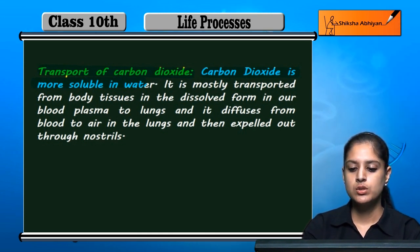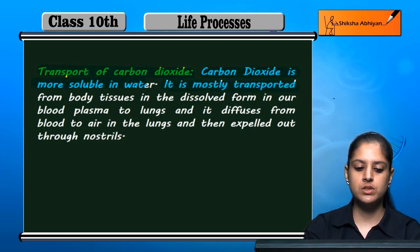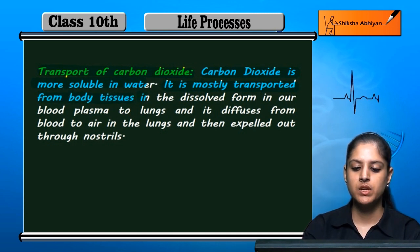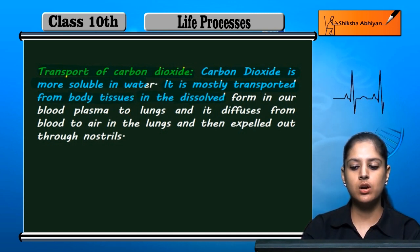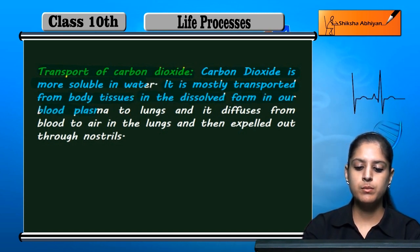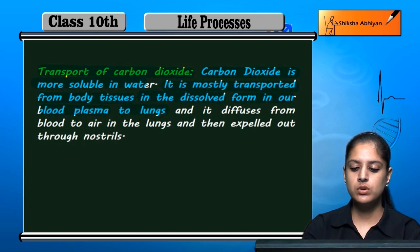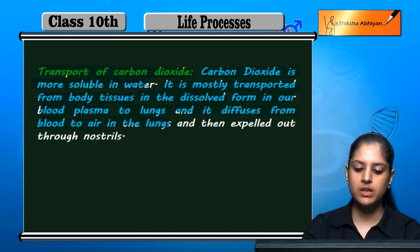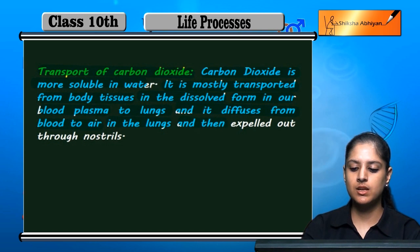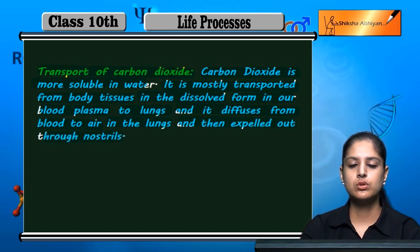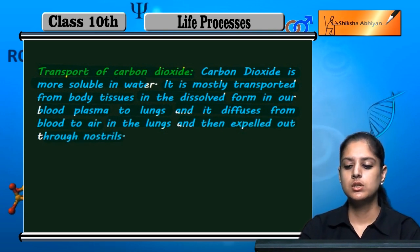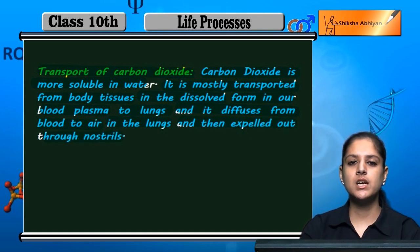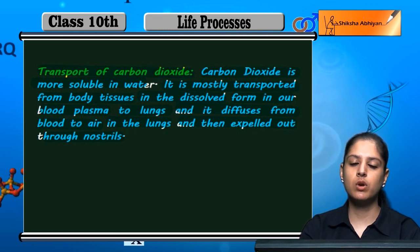Carbon dioxide is mostly transported from body tissues in the dissolved form in our blood plasma to the lungs, where it diffuses from blood to air and is then expelled out through the nostrils. Carbon dioxide is soluble, which facilitates this process.